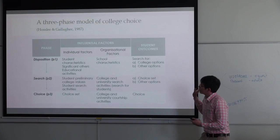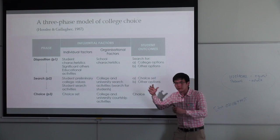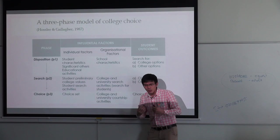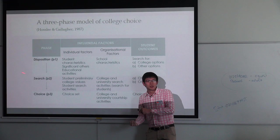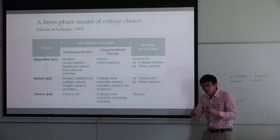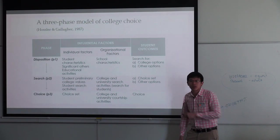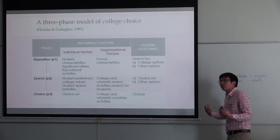Based on that model, Hoisley and Gallagher developed a process-based model. So if a student comes up with a desire and an aspiration to study, he searches for information and then makes a choice. The question is how those influential factors affect each step of the process — stages one, two, and three — building it up into a process-based model.